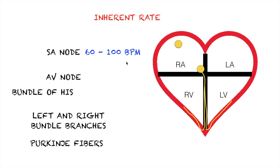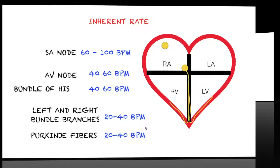However, if the SA node fails or there's a block somewhere, the AV node will kick in and generate its own impulse, producing a heart rate of 40 to 60 beats per minute — and that also includes the bundle of His. And if the AV node or the bundle of His fail, then the left and right bundle branches and the Purkinje fibers will generate their own impulse, with the capacity to make a heartbeat of only 20 to 40 beats per minute.